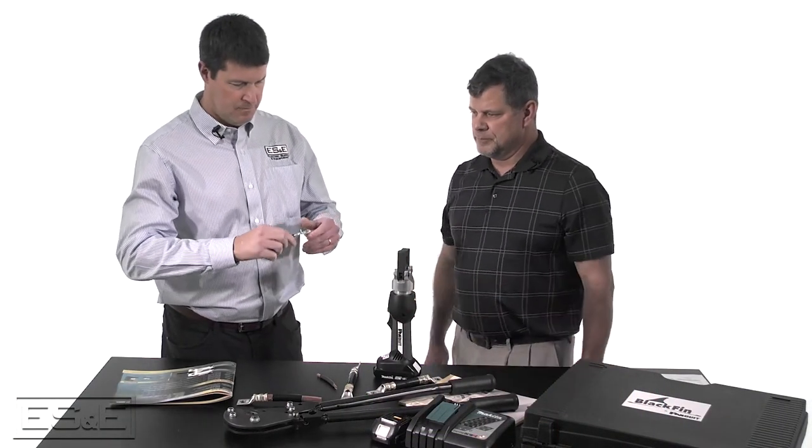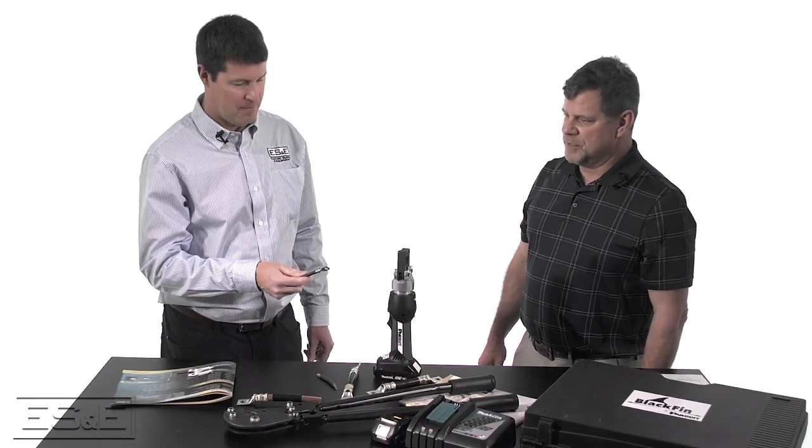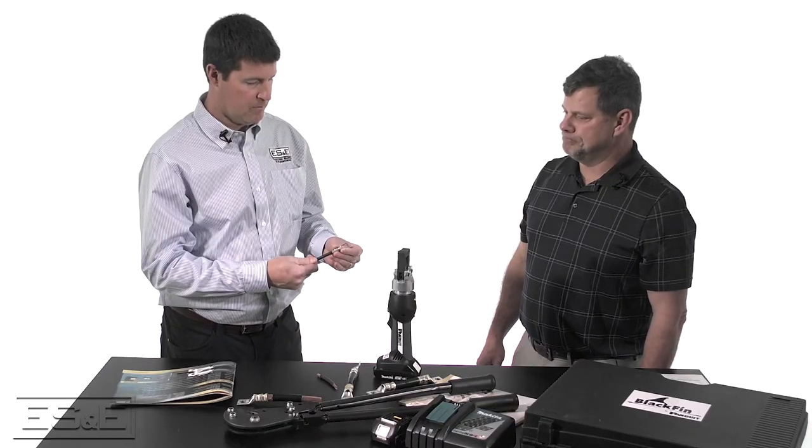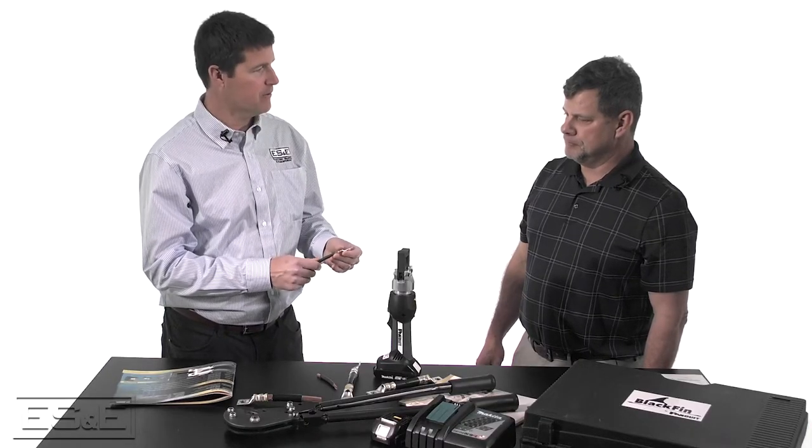And your second crimp. All right. That's on there pretty good. Yeah. With a four ton crimp, that's going to give you a UL, CSA approved crimp with four tons of pressure. Okay. So this is considered a controlled cycle crimp. Yes.